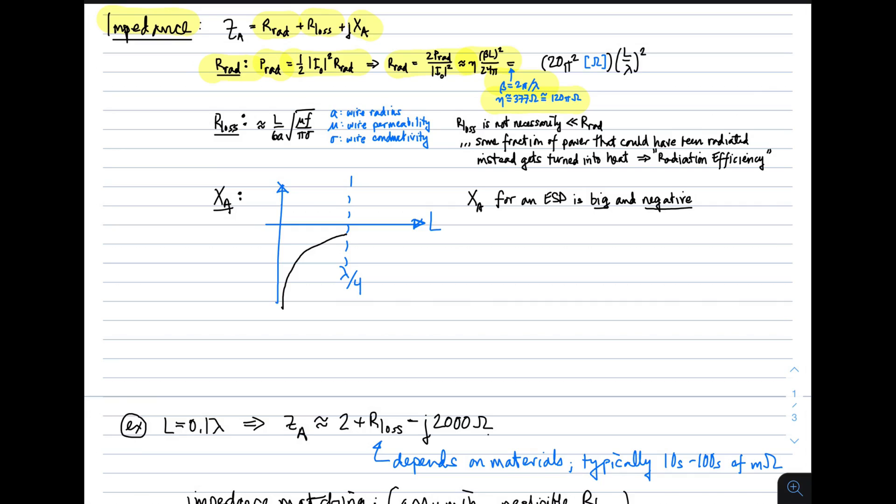and eta is 377 ohms, but 377 ohms is very, very close to 120 pi. So, we make those substitutions, and we find out that the radiation resistance of an electrically short dipole is about 20 pi squared ohms times the length of the dipole relative to a wavelength squared. So, nice, simple expression for that.